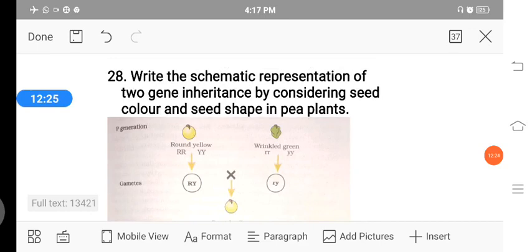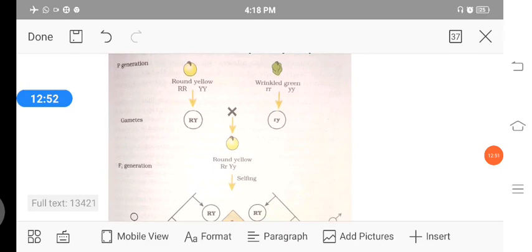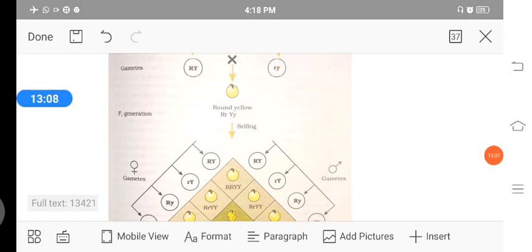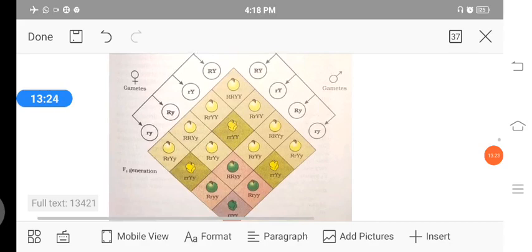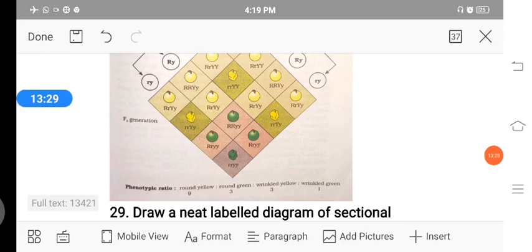Then, write the schematic representation of two gene inheritance by considering seed color and seed shape in pea plants. Nothing but two gene inheritance is a dihybrid cross. Here, only you are going to write the schematic representation. There is no need to write the explanation. The schematic representation is like that. In F1 generation, which are the parents you are going to cross, which are the characters you are going to select, and which are the gametes. Then in F1 generation, which is the heterozygous condition. Such heterozygous condition is self-pollinated. Which are the gametes. There are four gametes, these are four gametes. And how they are fused together, only you are going to write the checkerboard. Finally, you are going to write the phenotypic ratio 9:3:3:1.